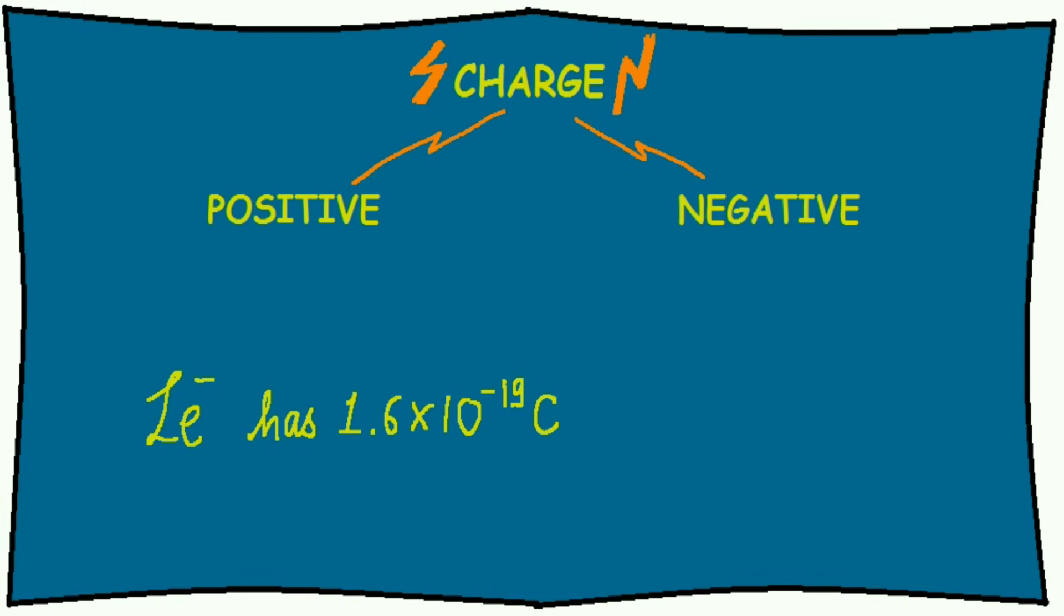Don't be confused about the unit. Just like one electron has a mass of approximately 9 × 10⁻³¹ kg, similarly one electron possesses this much charge.